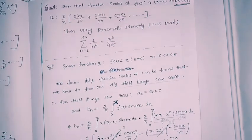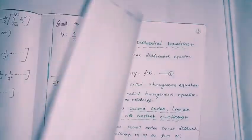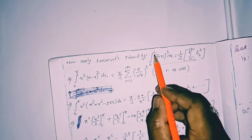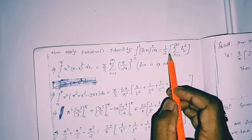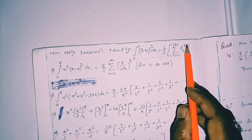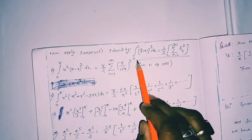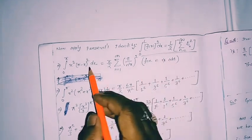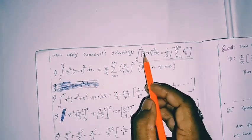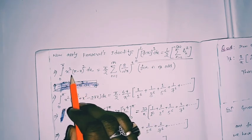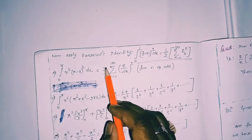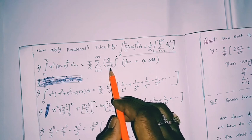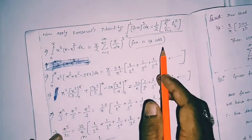Now we apply Parseval's identity. The general formula is ∫₀ˡ [f(x)]² dx = (l/2) Σbₙ². Here f(x) = x(π − x) and l = π, so the left side is ∫₀^π x²(π − x)² dx, and the right side is (π/2) times the sum of [8/(πn³)]² for odd n.